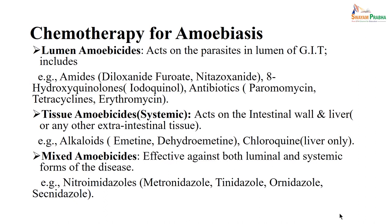There is also a situation where parasites are in tissue, that is systemic. Some drugs act on the intestinal wall when the parasite invades into the liver or extra-intestinal tissue. We use drugs like alkaloid emetine, dehydroemetine, or chloroquine, which acts on the liver only. However, we also have drugs that act on both the lumen and tissue — effective against both luminal and systemic forms of amoebiasis. These are the nitroimidazole group: metronidazole, tinidazole, ornidazole, or secnidazole.